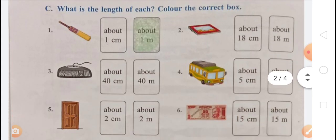Question C asks: what is the length of each? Color the correct box. The bed is about one meter, so color the 'about one meter' box. The disc is about 18 centimeters. The keyboard is about 40 centimeters. The bus is about five meters, so color the 'about five meter' box.